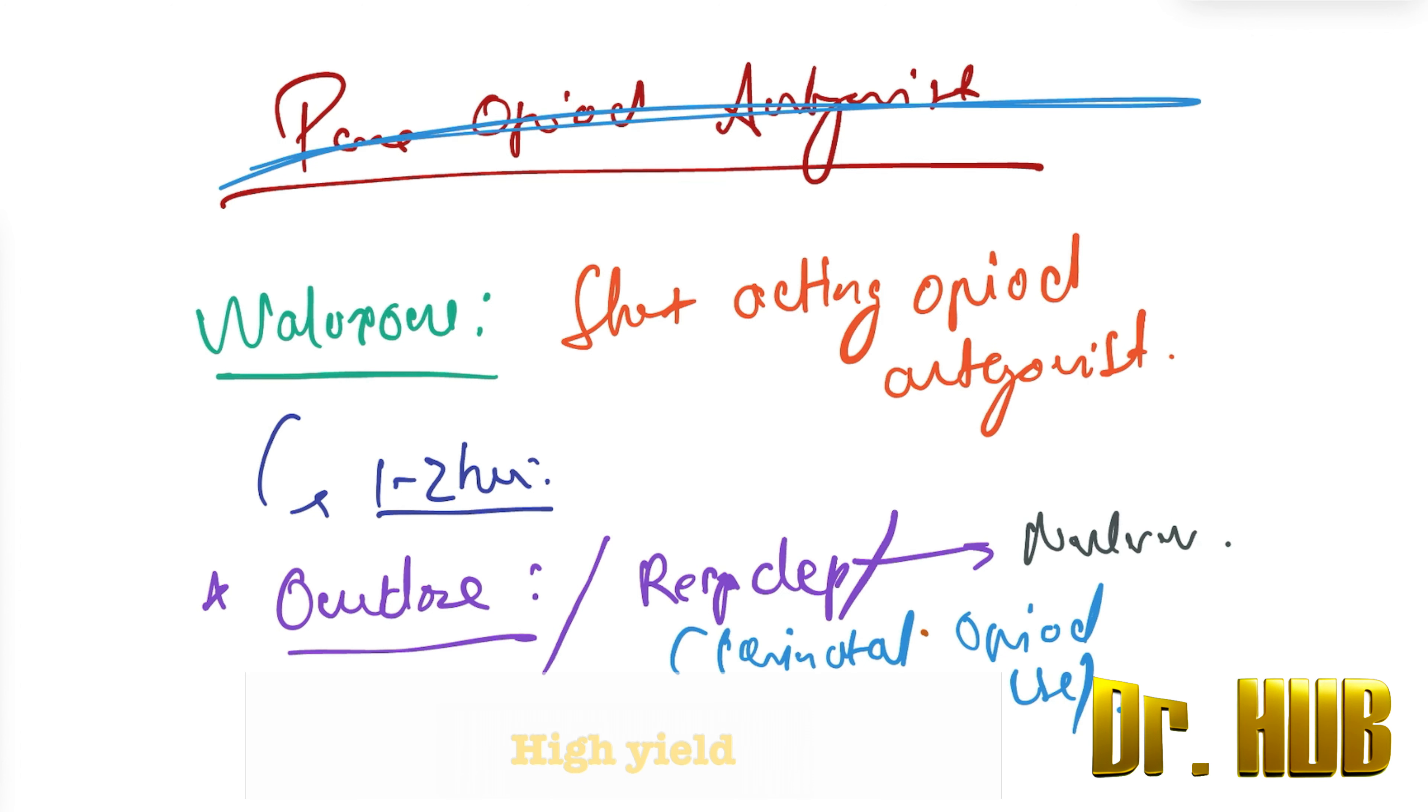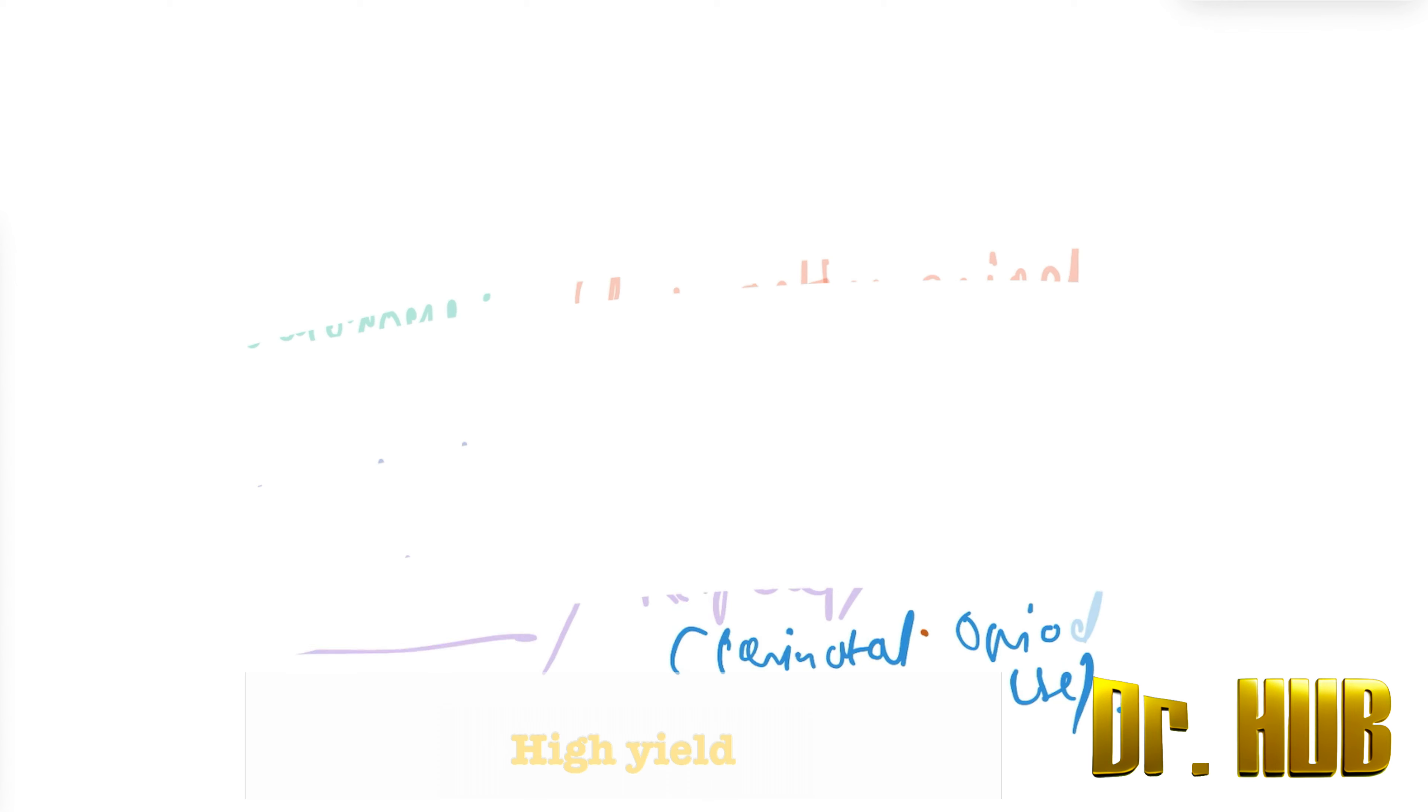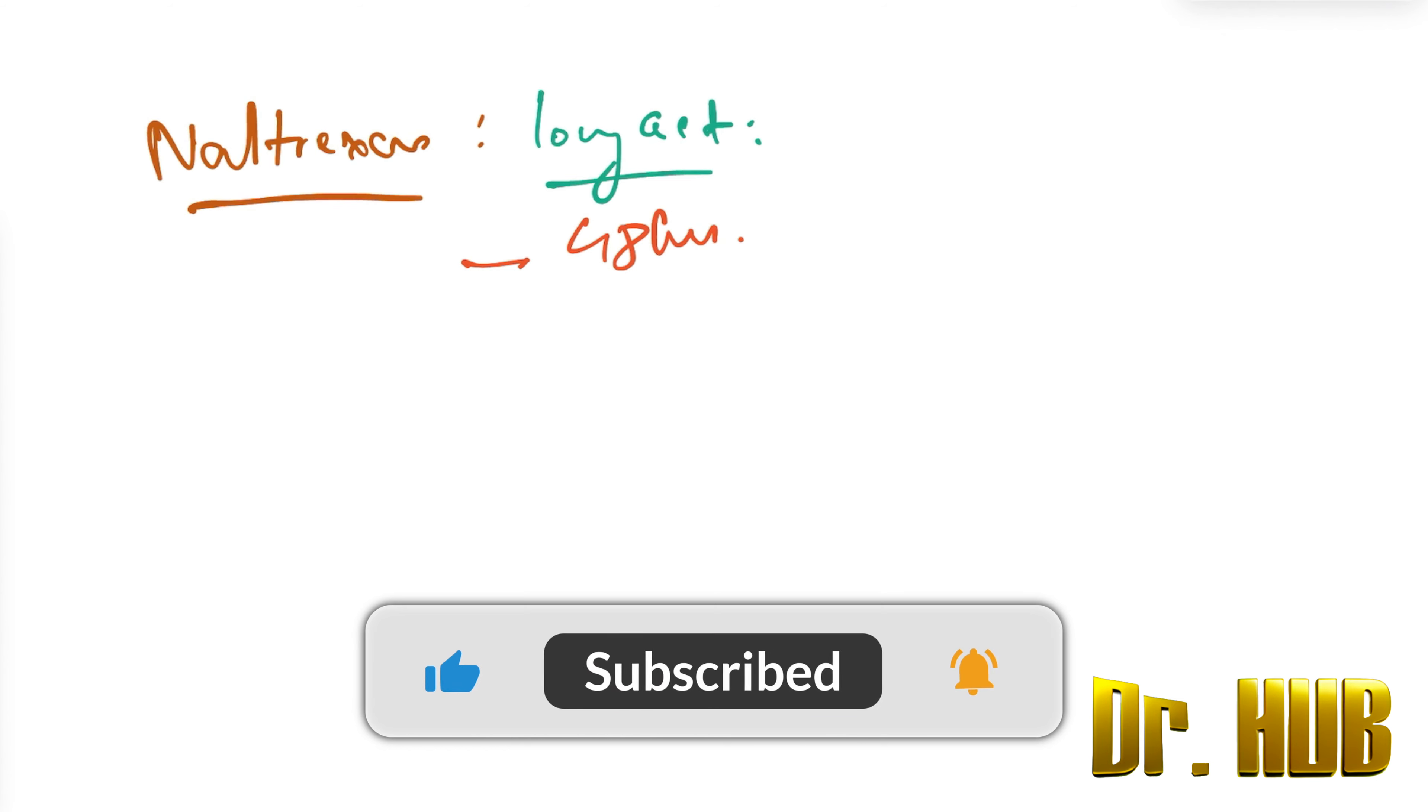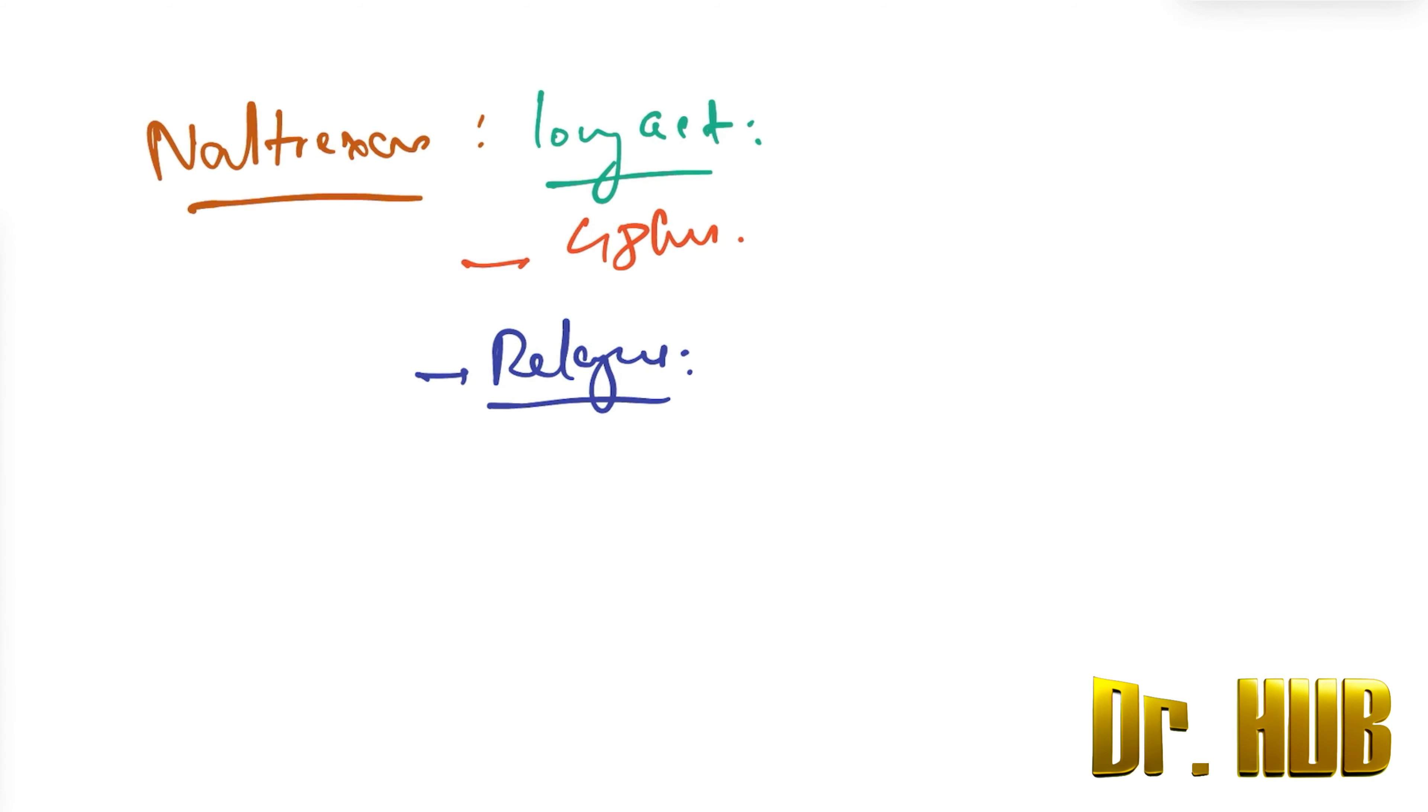The next drug we are focusing on is naltrexone. Naltrexone is a long-acting opioid antagonist with effects lasting up to 48 hours. It is used for prevention of relapse in opioid addiction treatment.